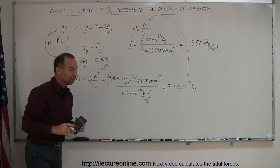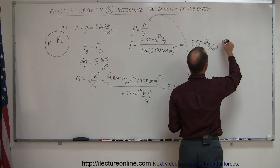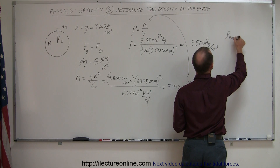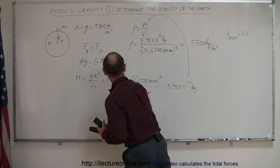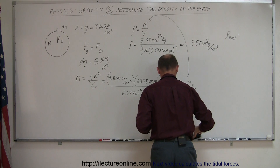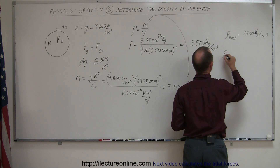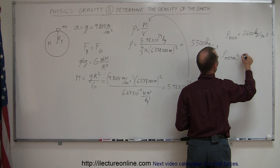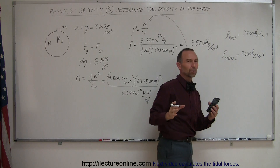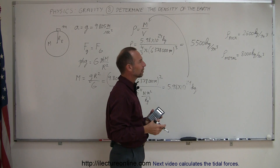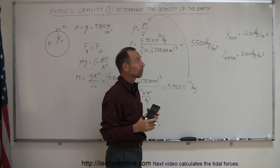That's how we figured out the density of the Earth: 5,500 kilograms per cubic meter. When you realize that the density of rock is about 2,600 kilograms per cubic meter, and the density of metal is about 8,000 kilograms per cubic meter — depending on which metal, but we think it's primarily iron and nickel — the average of those numbers is approximately 5,500 kilograms per cubic meter.